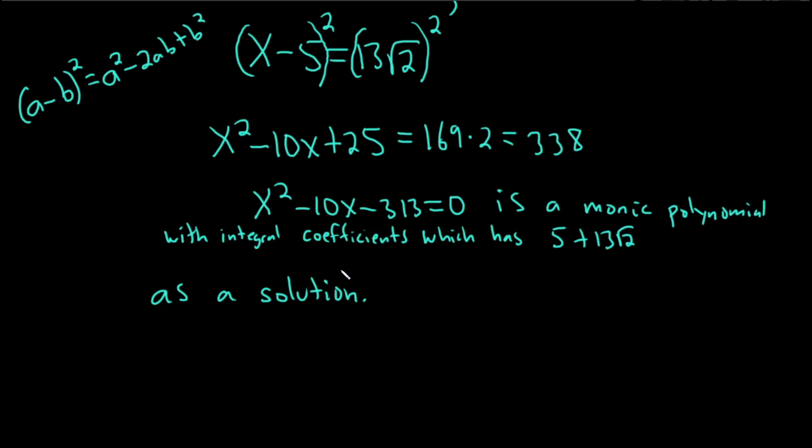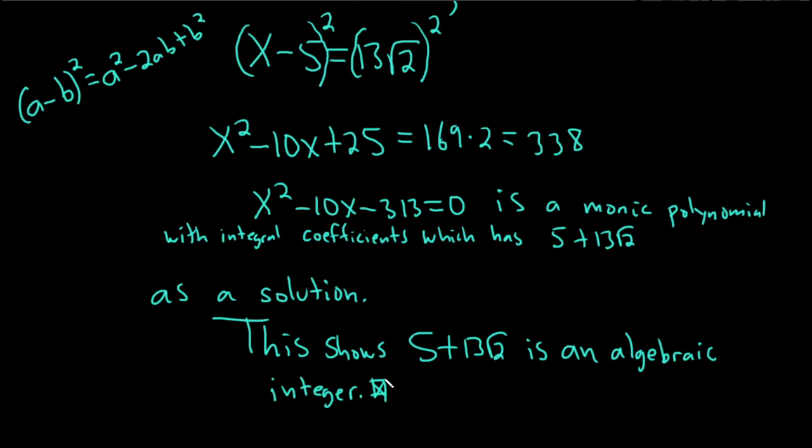That's exactly what it means for our number to be an algebraic integer. So this shows 5 plus 13 root 2 is an algebraic integer. And that completes the proof. I hope this video has been helpful. Good luck.